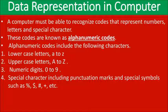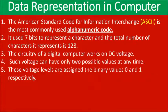The first and most important alpha-numeric code is called ASCII — American Standard Code for Information Interchange. In this computer system, ASCII is a 7-bit code used to represent each character, giving a total of 128 possible characters.